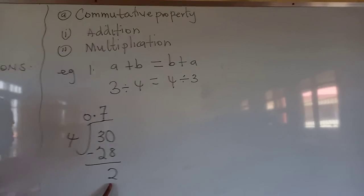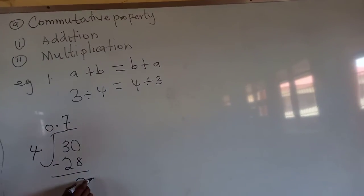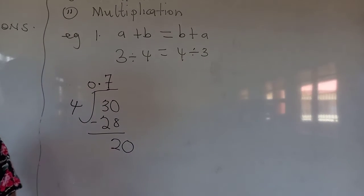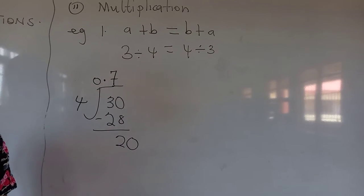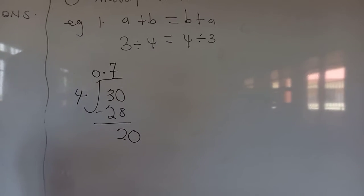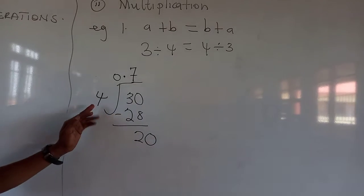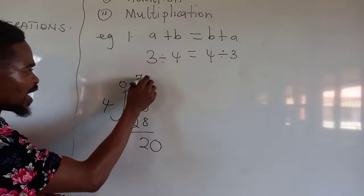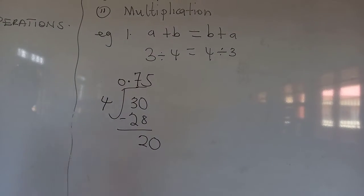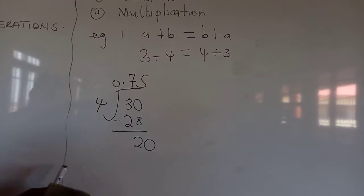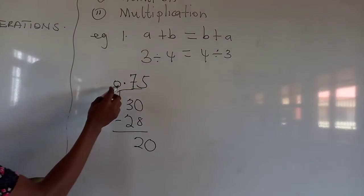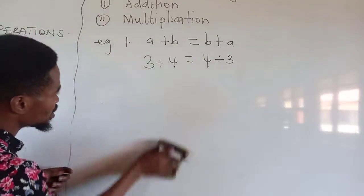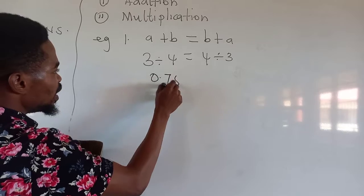Four can go into twenty five times. Therefore, three divided by four gives us zero point seven five. So three divided by four equals 0.75. Now we come to four divided by three: four oranges being divided by three children. We set up the long division with three outside and four inside.